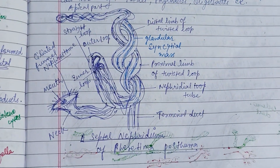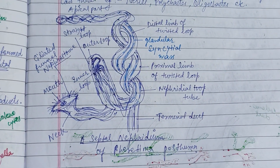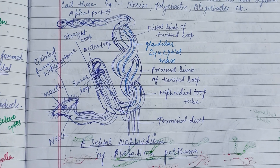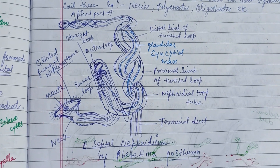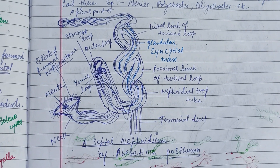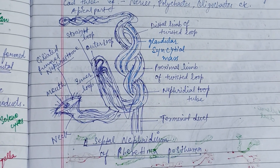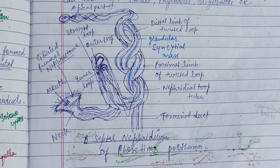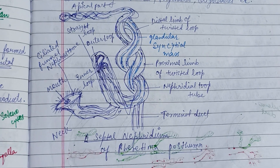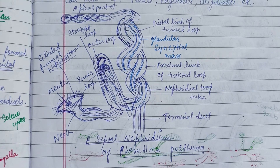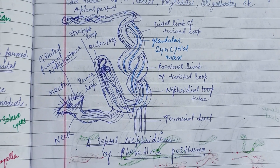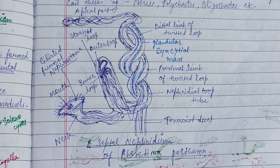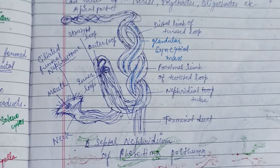Here is a picture of the septonephridia in Ferritima posthuma, also known as the earthworm. The labeled parts include the distal limb of the twisted loop, the proximal limb of the twisted loop, the nephridial tube, the terminal duct, the ciliated funnel nephrostome, the straight loop and outer loop, and the mouth.